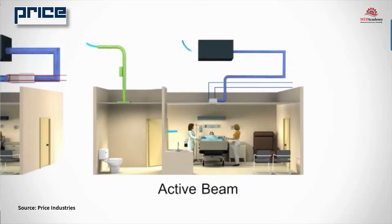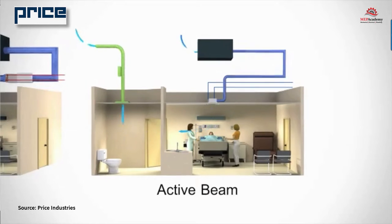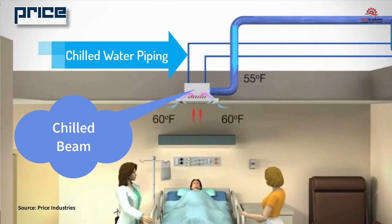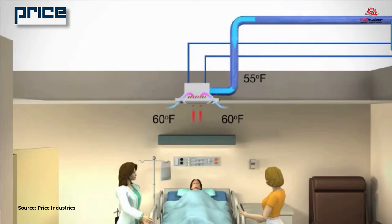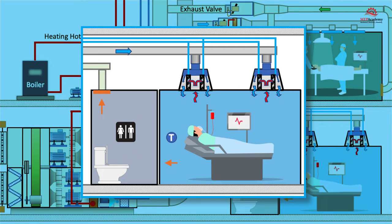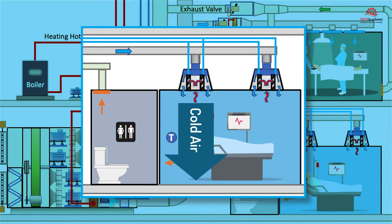Cool water will circulate through the chilled beam's coil and cool the air surrounding it. Cool air is heavier than warmer air, so the effect of the beam cooling the surrounding air will naturally cause a constant flow or circulation in the space. As the cool air drops, the warm air rises, causing the space to cool down.